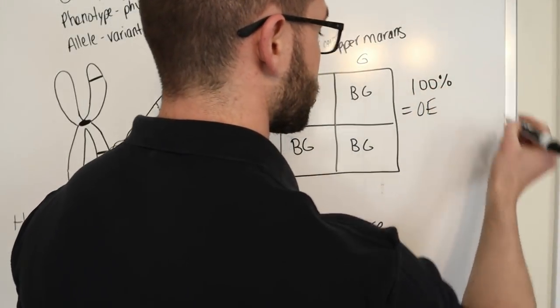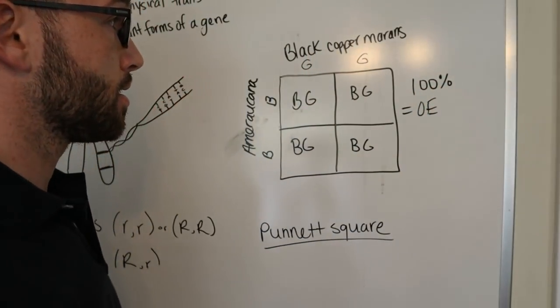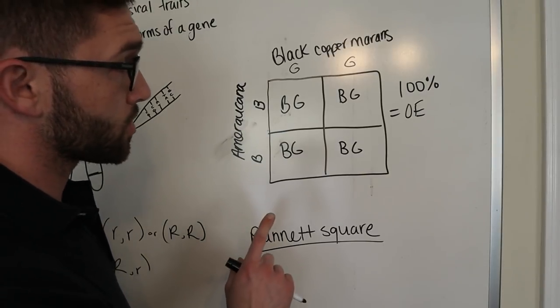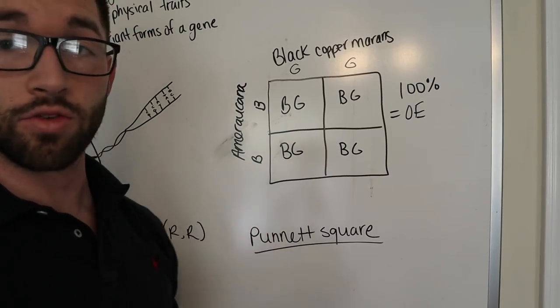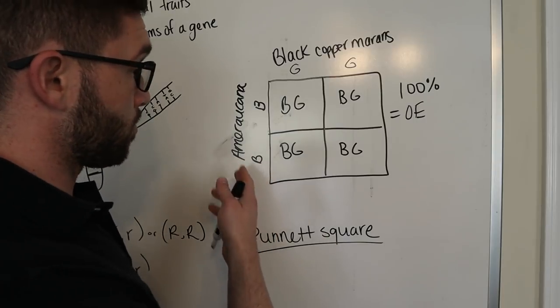So, 100% olive eggers from first-generation crosses. Now, in the next Punnett square, I'm going to show you what happens when you use an Easter egger as your blue egg gene.